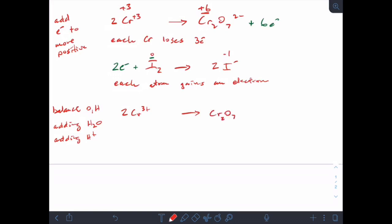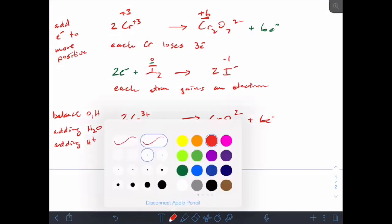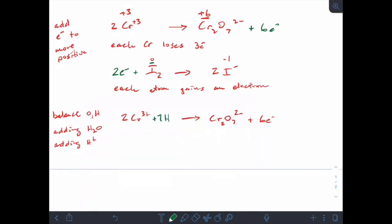So Cr3 plus goes to Cr2O7 2 minus plus 6 electrons. So I've got 7 oxygens on the right. So I need to add 7 waters to the left. So that balances the oxygens specifically. And then I need to balance hydrogens by putting H plus on the other side. So right now on the left side, I've got 14 hydrogens in that 7H2O. So I'm going to add 14H plus to the right.